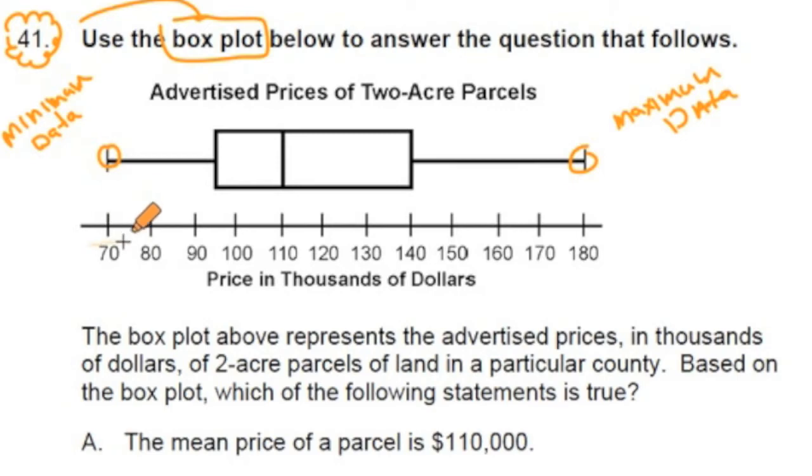So our lowest data point in this data set is $70,000, and our highest data point is $180,000. Make sure you see that right away. This part right here of a box plot represents the median number, so this is $110,000. Half the data points are above $110,000 and half of them are under $110,000.